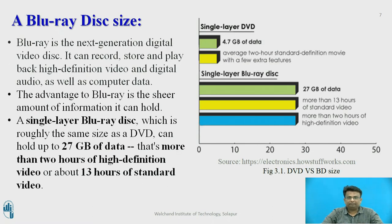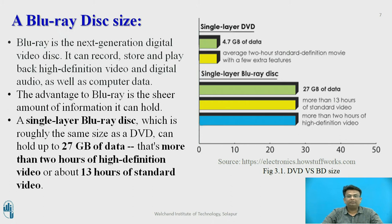The Blu-ray Disc size comparison: A single layer DVD has a maximum of 4.7 GB of data, enough for an average 2-hour standard-definition movie without extra features. The Blu-ray is a next-generation digital video disc that can record, store, and play high-definition video, digital audio signals, and computer data. A single layer Blu-ray disc, roughly the same physical size as a DVD, can record up to 27 GB of data.